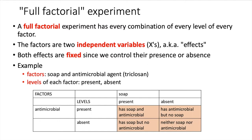In this type of experiment, it is what we call a full factorial experiment. That means that for each of the factors that we have, we have every combination of levels that you can have between those two factors.